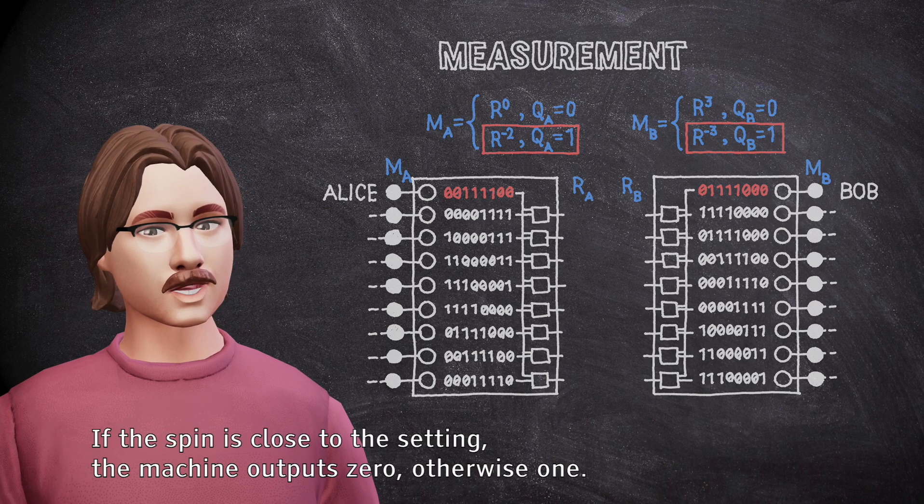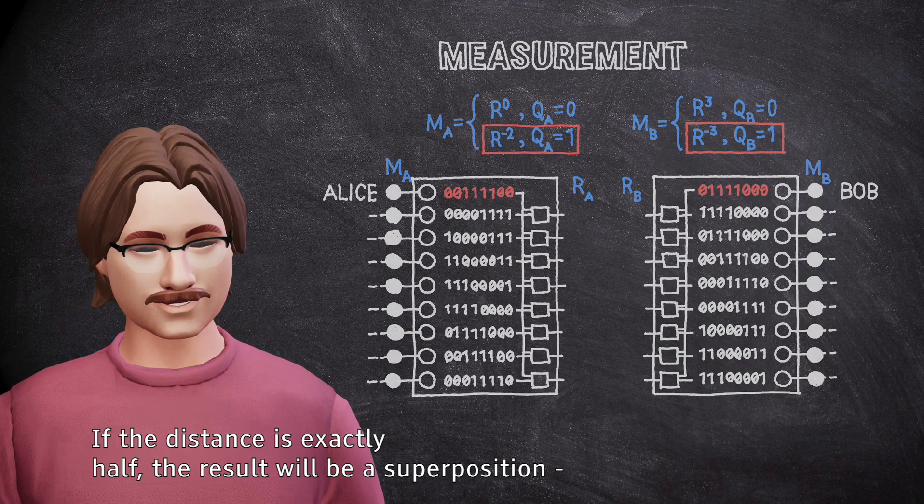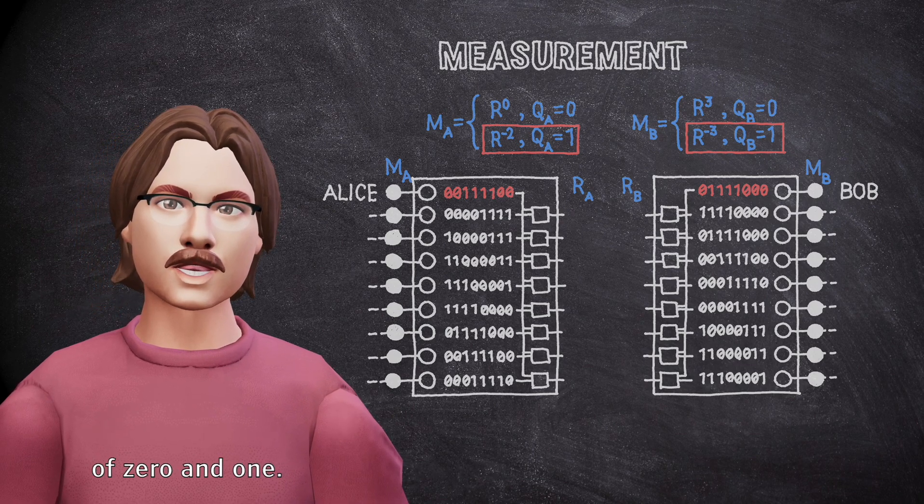If the spin is close to the setting, the machine outputs zero, otherwise one. If the distance is exactly half, the result will be a superposition of zero and one.